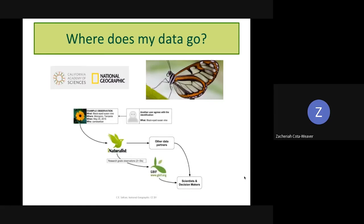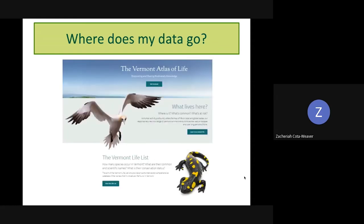Where does the data go? The data on iNaturalist is housed at the California Academy of Sciences — they're collecting and storing it. When it reaches research grade level, it goes into a program called GBIF, which allows scientists to look at iNaturalist data alongside data from other databases collected together, to see big trends and make inferences. The Vermont Atlas of Life is this amazing project that Vermont Center for Eco Studies started, trying to document every living thing in the state, and iNaturalist has been tremendously helpful in doing that.